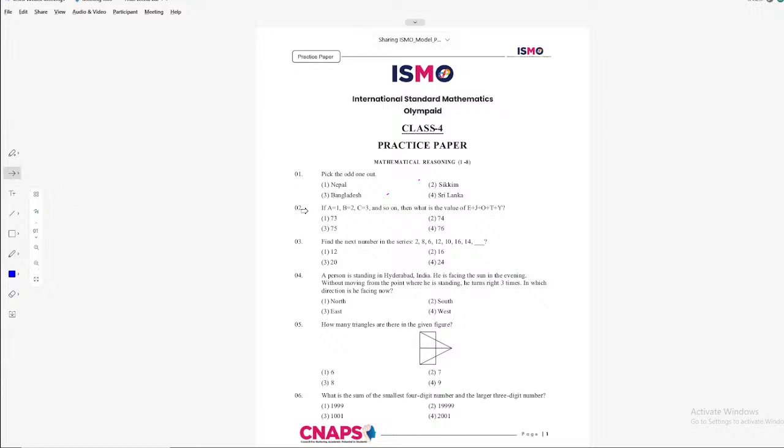So let's do the first one, pick the odd one out. The first few questions 1 to 8, it is mathematical reasoning. So pick the odd one out. Nepal, Sikkim, Bangladesh, Sri Lanka. So which is the odd one out? Obviously Sikkim. It is one of the states in India, whereas Nepal, Bangladesh, Sri Lanka are the other countries. So for the first question, option 2 is the correct choice.